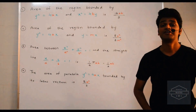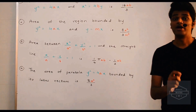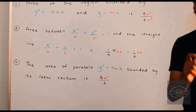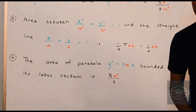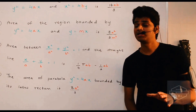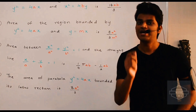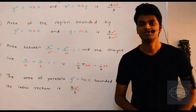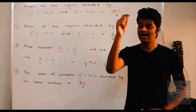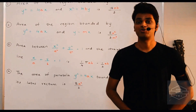The next shortcut: the area of the parabola y² = 4ax bounded by its latus rectum is given by 8a²/3 square units. The latus rectum is the line which passes through the focus and is parallel to the y-axis. So the area between the parabola y² = 4ax and its latus rectum is 8a²/3 square units.